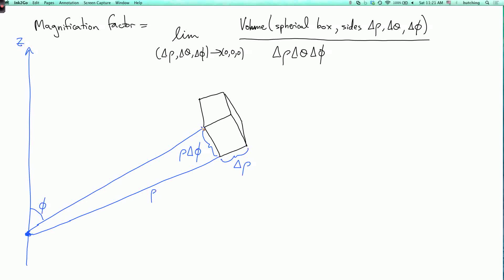And this third side of the box comes from varying theta. But its length is not delta theta. We have to multiply delta theta by the distance to the z-axis. So if we go straight to the z-axis like this, then this distance is rho times sine phi. So the length of this side of the box is that times delta theta. So this length is rho sine phi delta theta.